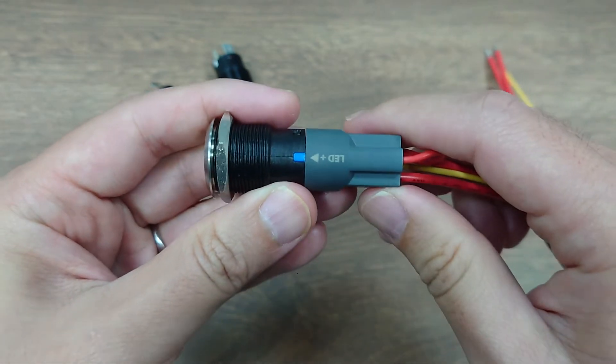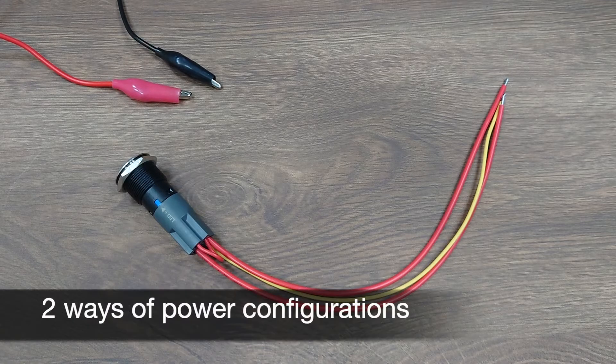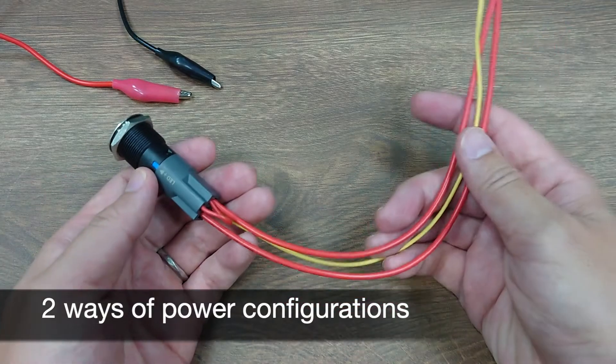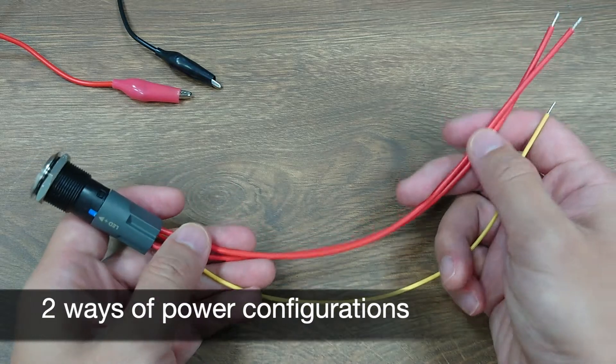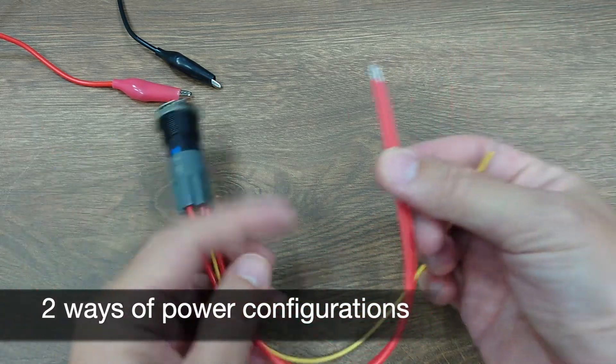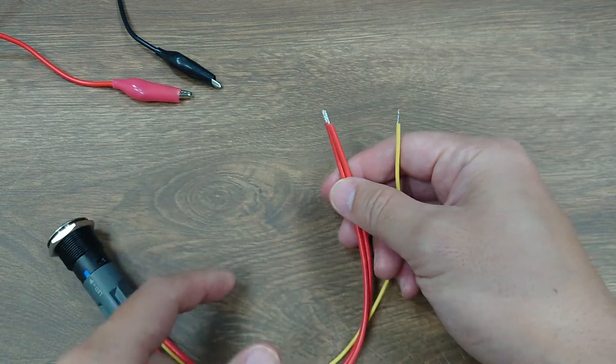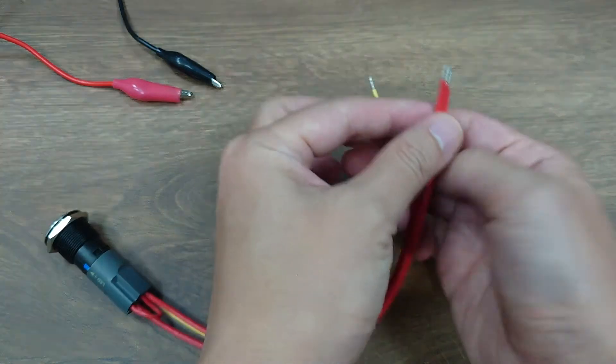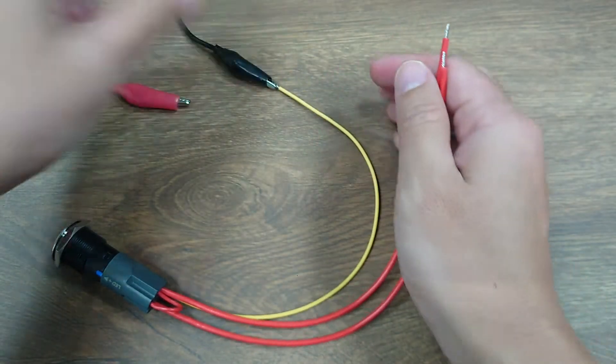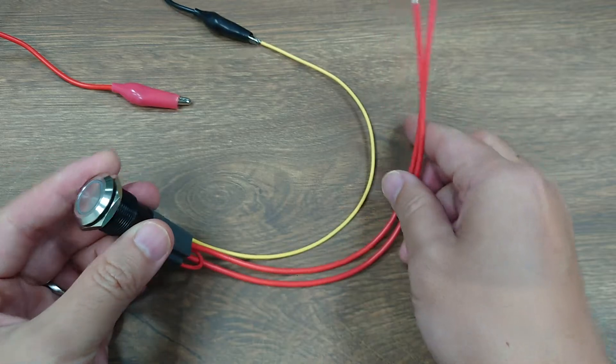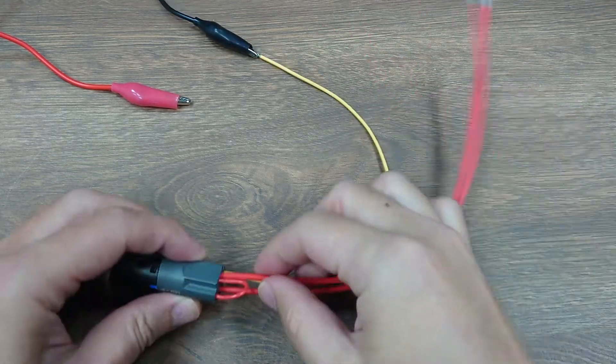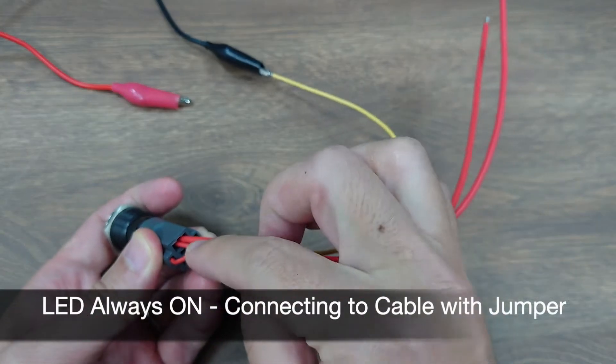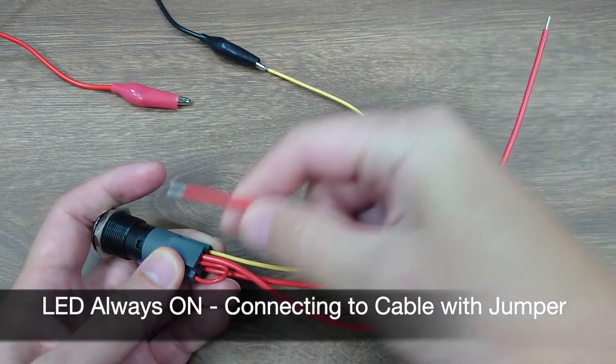When connecting the power, there are two ways to do so. You can see there are three cables here - two positive cables and one negative cable. First, connect the LED negative cable to the DC ground. Then for the rest, one of these cables will go to the DC positive and the other one will go to the device it controls. If you connect the cable with the jumper cable to the DC positive, the LED will always be powered by the input cable.